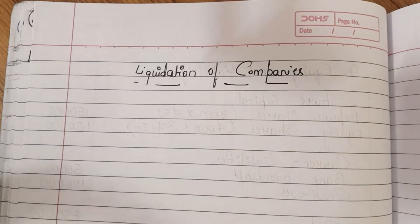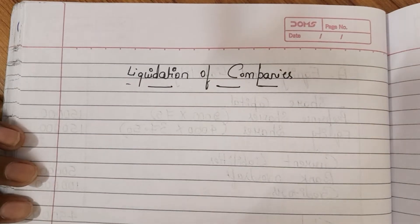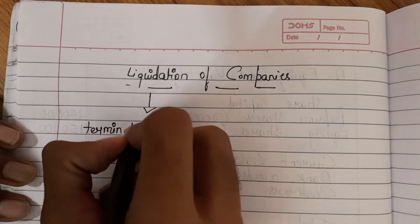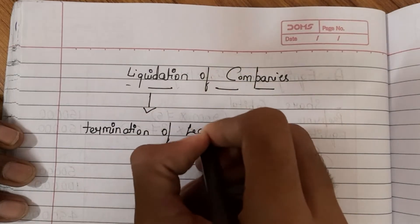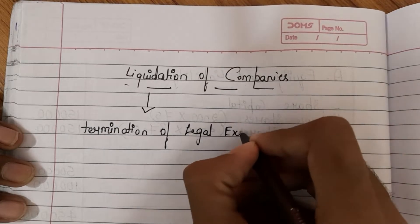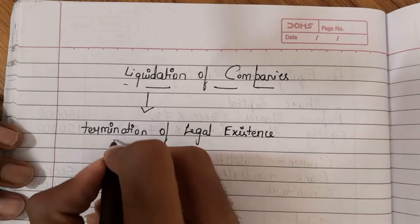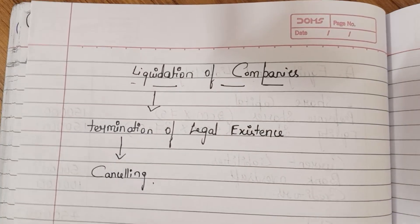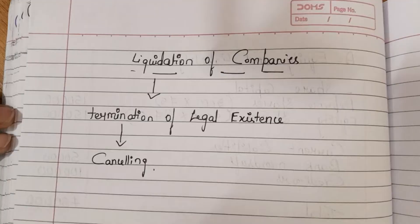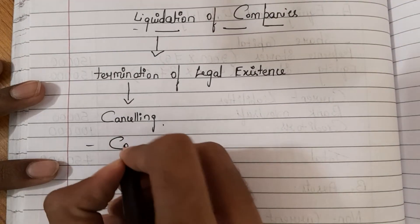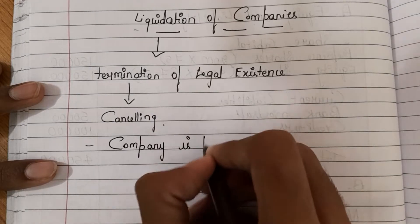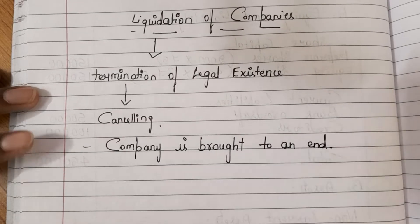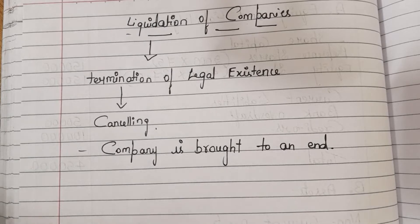What do you mean by liquidation of company? Simply put, liquidation means termination of legal existence. We all know that a company is a legal entity — it exists by law. So cancelling or closing that legal existence is known as liquidation. In simple terms, the company is brought to an end — the company is closed.